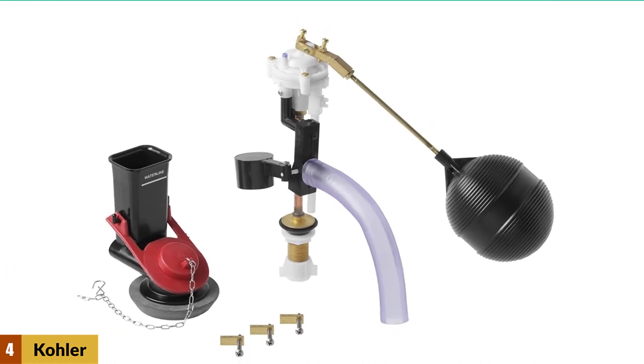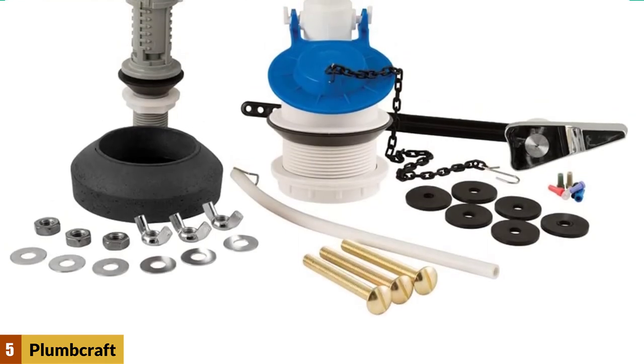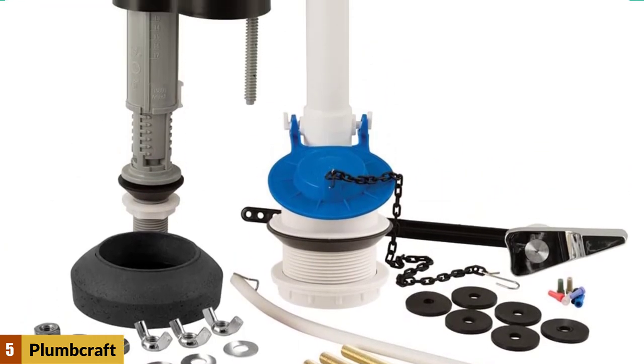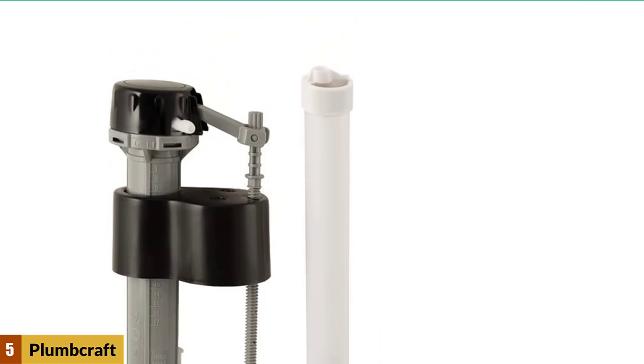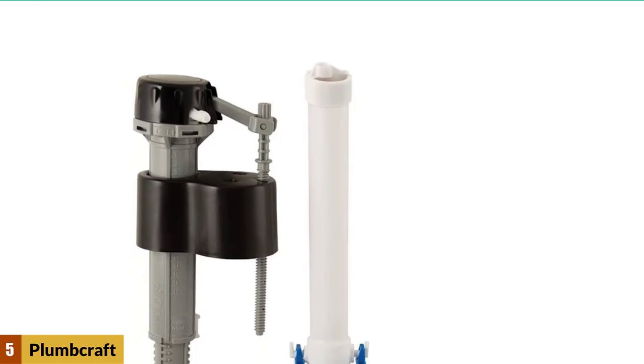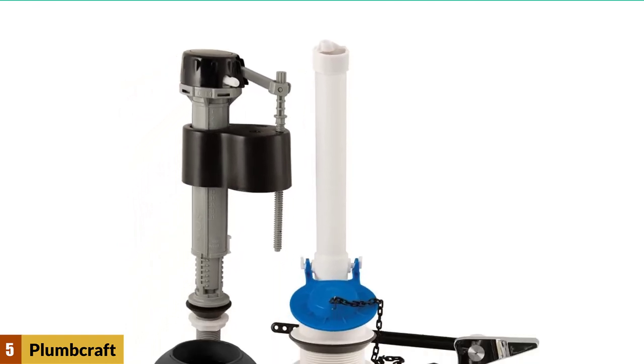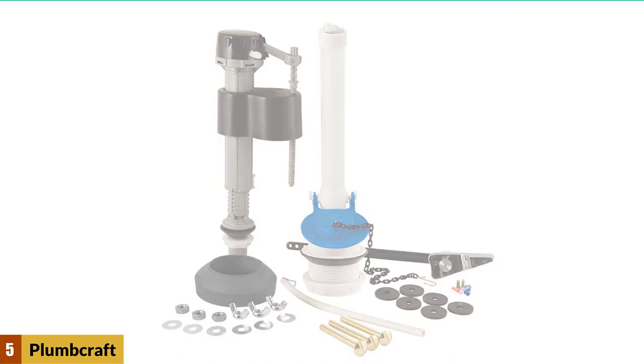At number five, Plumbcraft 7029000 toilet repair kit, white/black. It includes fill and flush valves, bolts, washers, toilet flapper, gasket, and flush lever. It aids you in conserving water. Everything about this set is built to last. There are no parts and materials that are prone to corrosion and rust formation. It also turns a noisy toilet into a quiet one as it replaces the floating ball mechanism.